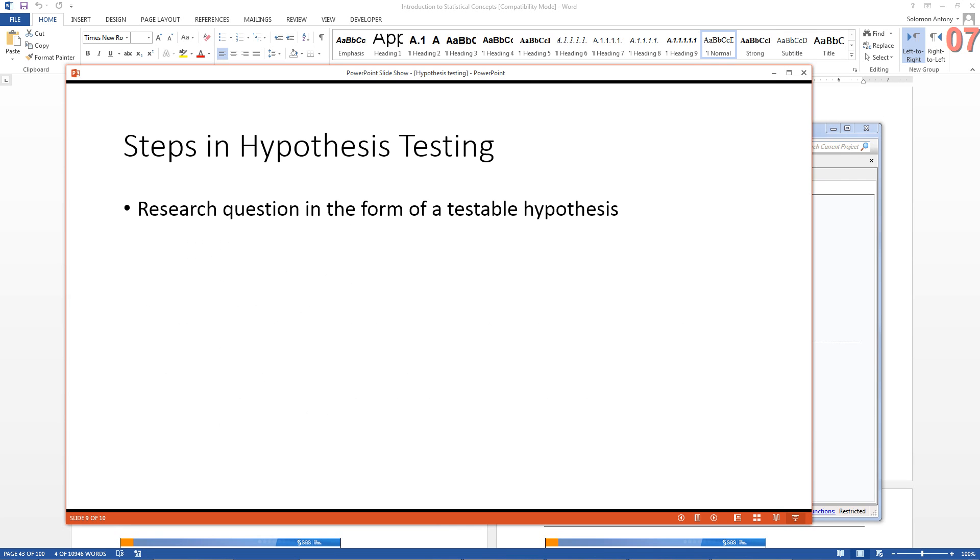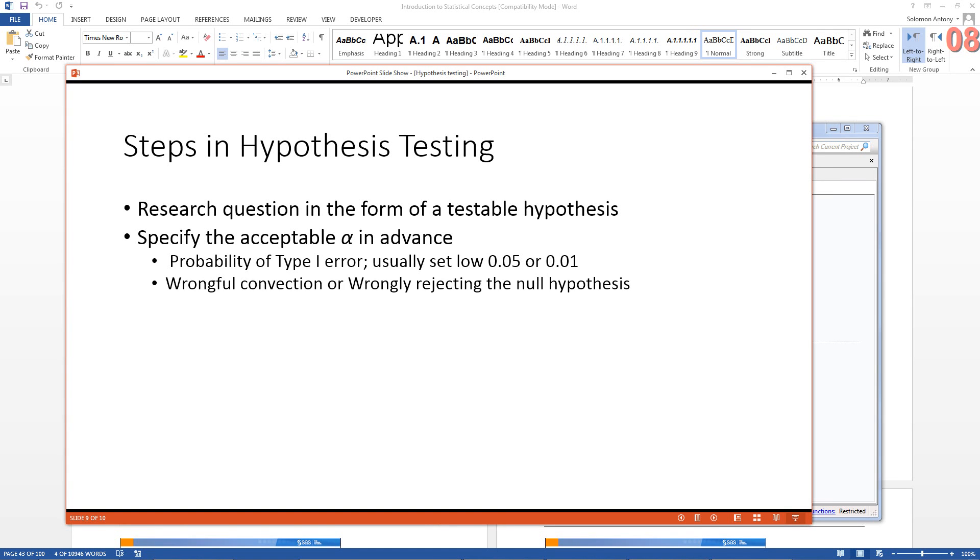All right, now how do we go about doing hypothesis testing? You start by setting up your research question in the form of a testable hypothesis. And then you, in advance, you specify an acceptable alpha level. Alpha is a probability of type 1 error, so type 1 error. And usually, you set it to low, like 0.05 or 0.01. And we want to make sure that this error is wrongful conviction of an innocent person.